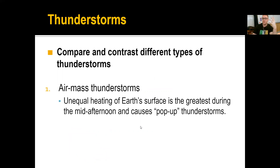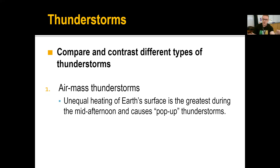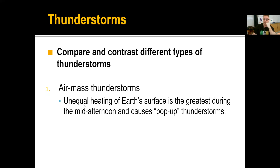We have different types of thunderstorms, and they generally show up depending on what's going on atmospherically in specific areas. The first is called air mass thunderstorms, which come from an unequal heating of Earth's surface. These are the ones we see generally around four o'clock in the afternoon in July. Because it was cold in the morning, it took a long time for the surface to heat up. By mid-afternoon there's enough instability and evaporation that convection produces pop-up thunderstorms.